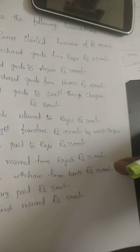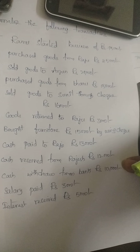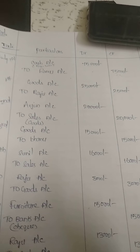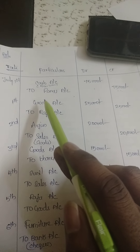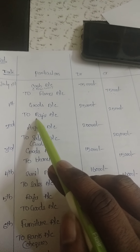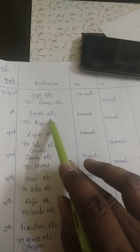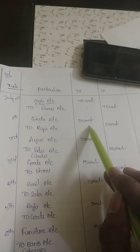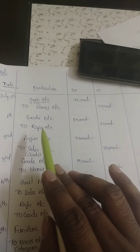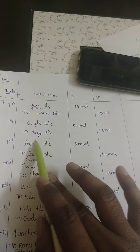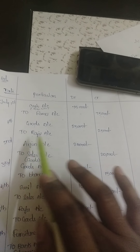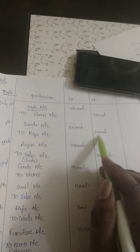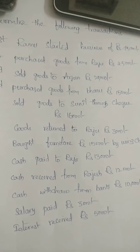Second transaction on July 1st — purchase goods from Raju with 25,000 rupees. Goods are received, so it comes under the real account. Purchases account is debited 25,000 rupees. Raju is the giver — it involves the personal account — so To Raju Account 25,000 rupees on the credit side. Third transaction — sold goods to Arjun for 20,000 rupees. Arjun is the receiver, so Arjun Account is debited 20,000 rupees. To Sales Account 20,000 rupees on the credit side.